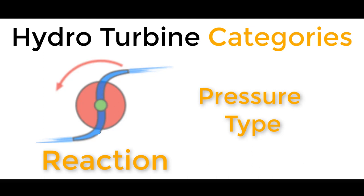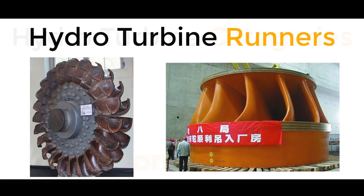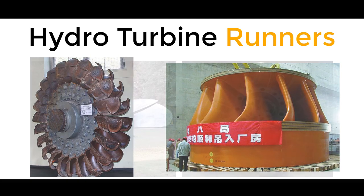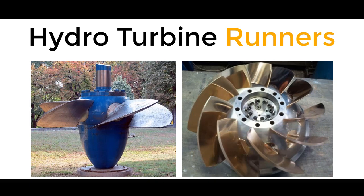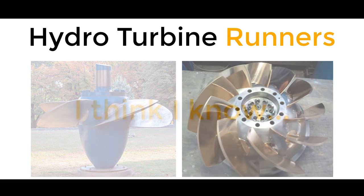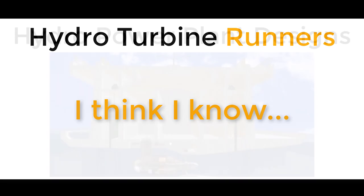The runner is the part of the hydroelectric turbine that converts kinetic energy to mechanical energy. The runner will have different shapes depending on the turbine type — it could be a Pelton runner, a Francis runner, a Deriaz runner, or a Kaplan type runner. There's a lot of terminology that gets thrown around and it can be confusing, so it's worth being clear on that.